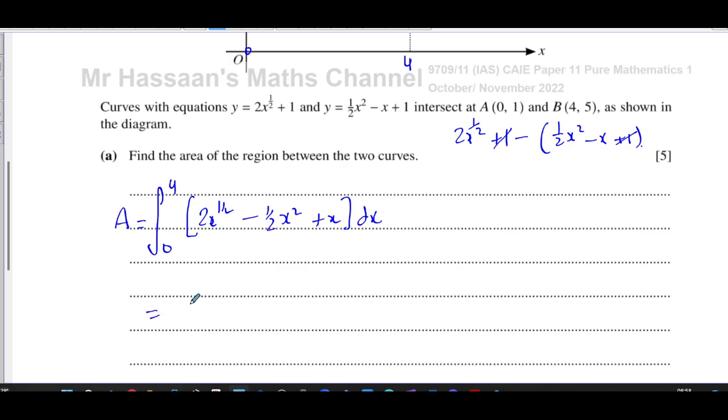Everything is ready to be integrated. There's nothing I have to change; everything's in index form, all the powers are on top. I can just go ahead and integrate. I have to add 1 to the power, so it becomes 2x to the power three over two divided by three over two, minus a half x cubed over 3, plus x squared over two. And then our limits of 0 and 4 must go in.